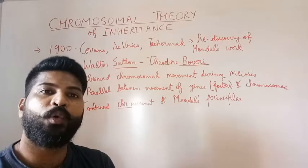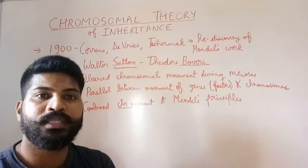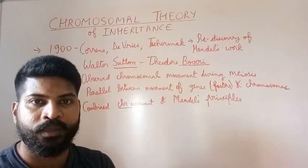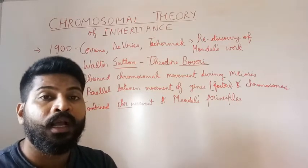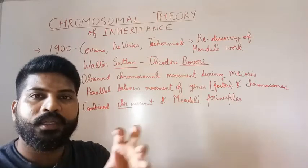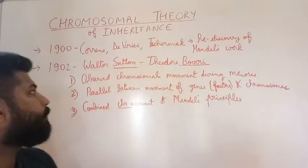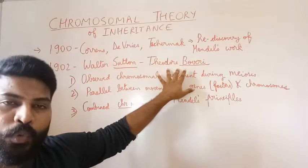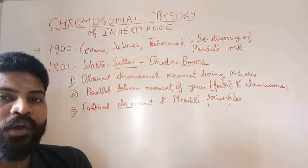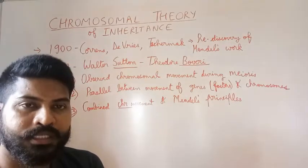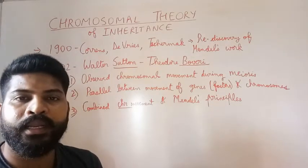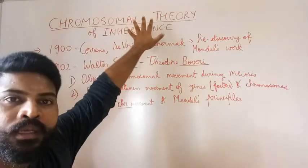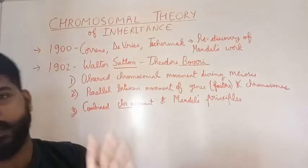During that time, microscopy had advanced and scientists had worked out the process of cell division — what happens during cell division, especially during meiosis, what the different stages are. In 1902, Walter Sutton and Feodor Boveri combined this knowledge of chromosomal movement during meiosis along with Mendel's ideas of inheritance and variation, and proposed what is called the chromosomal theory of inheritance.